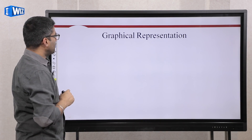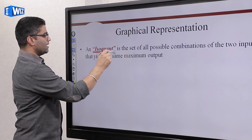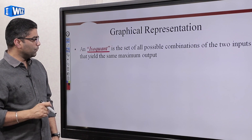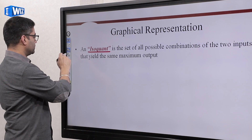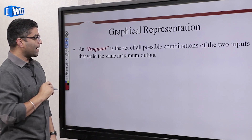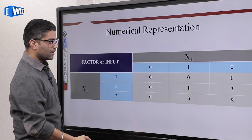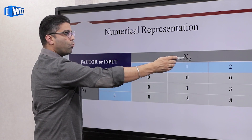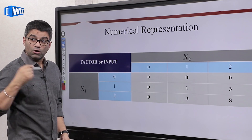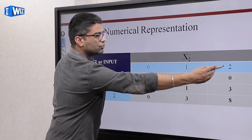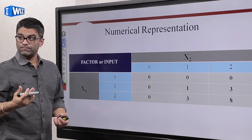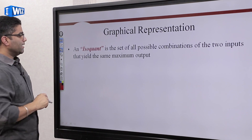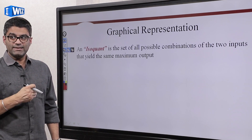Now let's graph it numerically. An isoquant — a very important concept — is the set of all possible combinations of the two inputs that yield the same maximum output. For example, looking at an output of three, you can get there by hiring two units of x1 and one unit of x2, or you can also get the same output by hiring two units of x2 and only one unit of x1. That's what we represent on one isoquant — all possible levels of inputs that yield the same output.